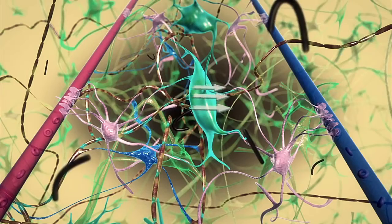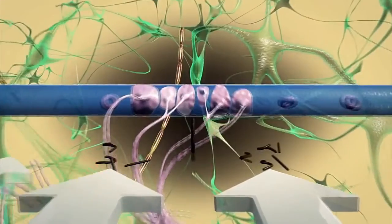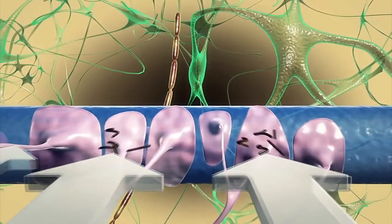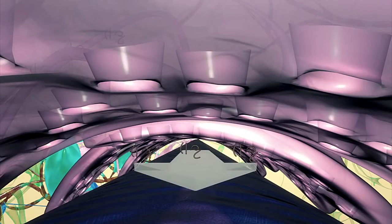During sleep, cerebrospinal fluid enters the brain rapidly to mix with interstitial fluid, washing brain waste from arteries and veins.